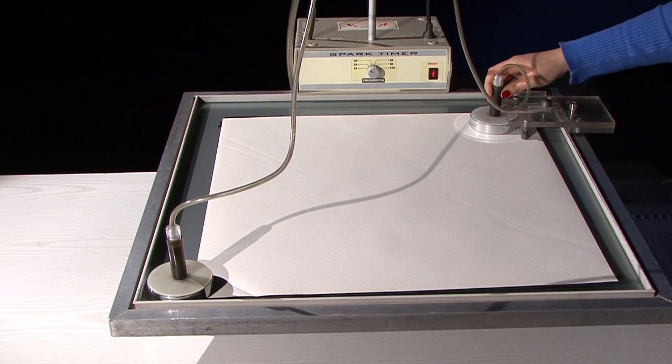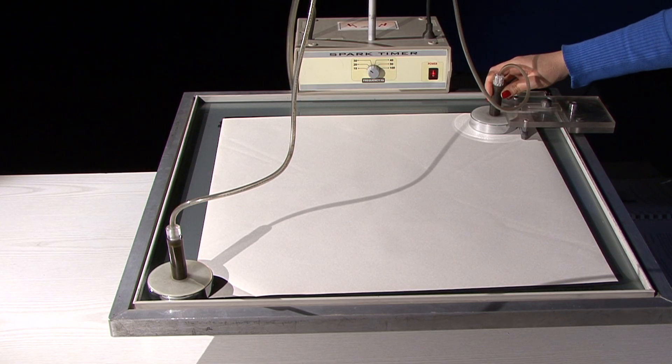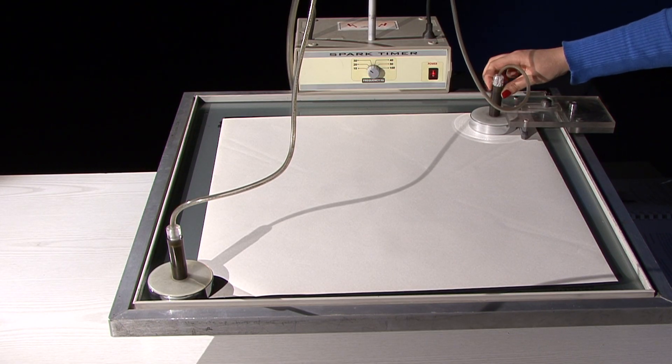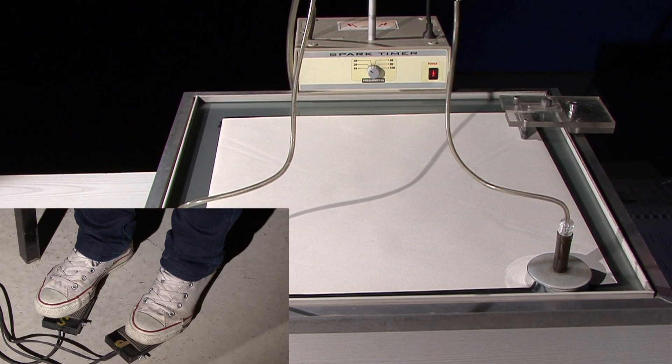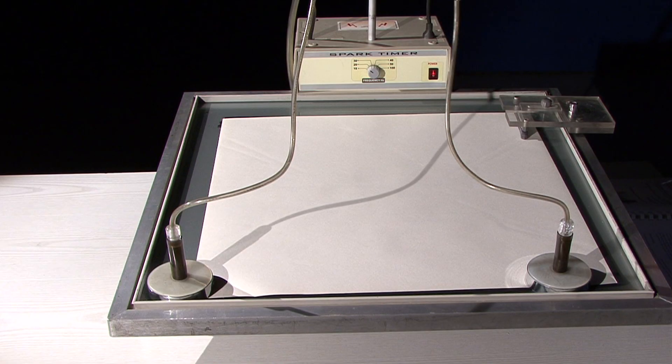Keep the puck fixed so that it cannot slip down. Release the puck and press on the S and P switches simultaneously. This way the puck moves downward with zero initial velocity.